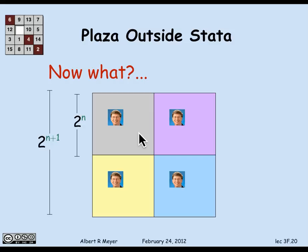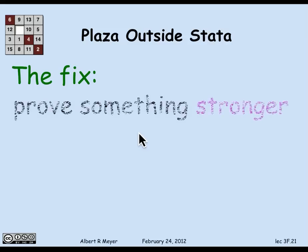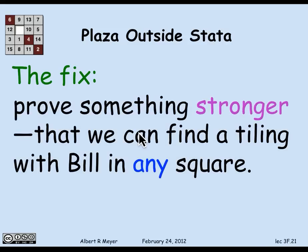The way to get unstuck is unexpected: prove something stronger. Instead of just Bill in the middle, prove that we can find a tiling with Bill placed in any specified square. Wherever you want to put him, the rest can be tiled with L-shaped tiles. What's unintuitive is that proving something stronger ought to be harder — but because the conclusion is stronger, we also have a stronger induction hypothesis to work with, and the net proof is actually easier.